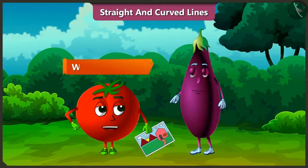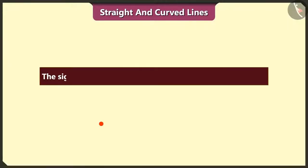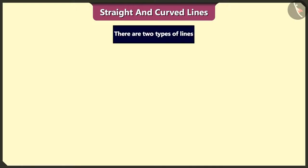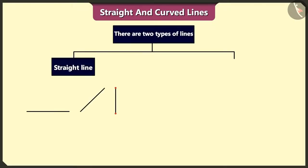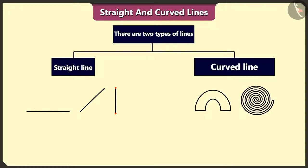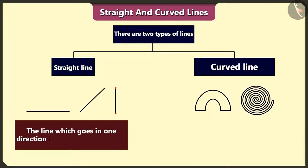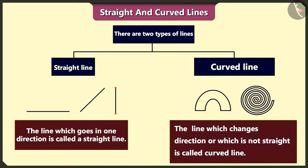But Bingu, what is this line? The sign made from one dot to other dot is called line. There are two types of lines, straight line and curved line. The line which goes in one direction is called a straight line. And the line which changes direction or which is not straight is called curved line.